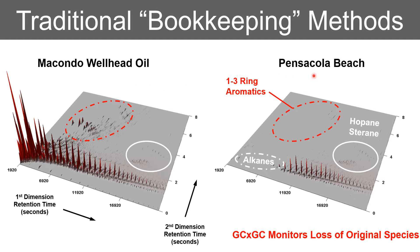The parent crude oil is then compared against field samples, and compositional changes can be ascribed to weathering — the loss of low molecular weight alkanes, the water washing of one-to-three ring aromatics — and most importantly, source identification is provided by persistent hopanes and steranes. The major shortcoming of this technique is that it does not address new species that are generated from weathering processes.